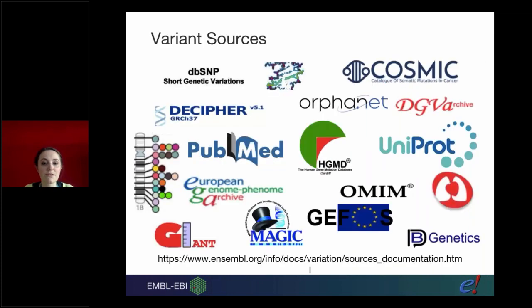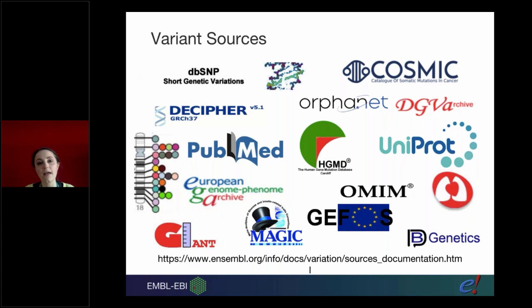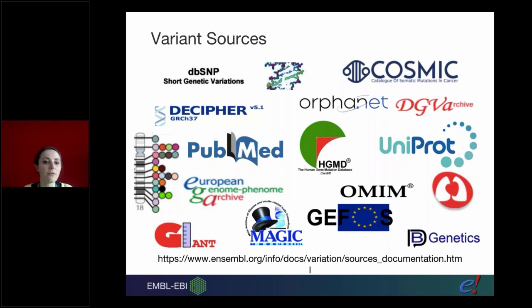We have variation data from a number of different sources - this lists all the sources where we have variation data for human. Our major sources include dbSNP, who provide accessioning for submitted variants, and short variants from a number of different sources. We get data from gnomAD and Thousand Genomes through dbSNP because they accession the data. We also have somatic variations from cancer via COSMIC, we get phenotypes from the GWAS Catalogue, and we work with UniProt, among a number of other sources.